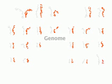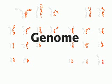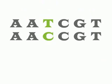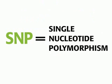An entire set of 23 human chromosomes is called a genome. The human genome is composed of 3 billion base pairs. Variation at a single base pair is called a SNP, or single nucleotide polymorphism.